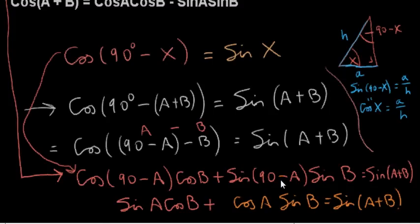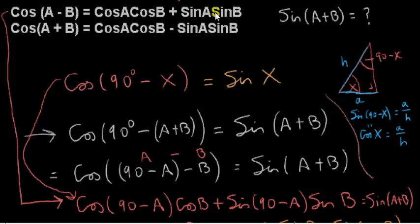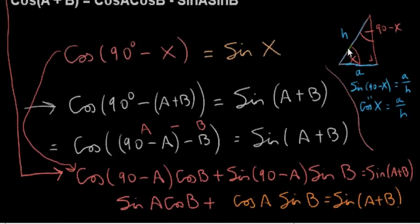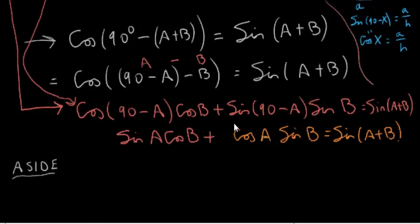We can also prove that sine of 90 minus A equals cosine of A by referring to the top identity, though I won't do that here. I've only proven it for the case where A is an acute angle, but it's actually true in general for any angle A.